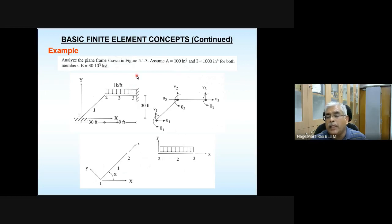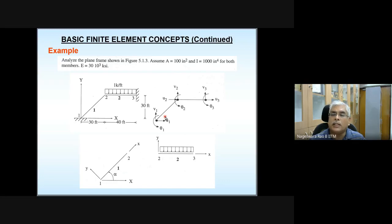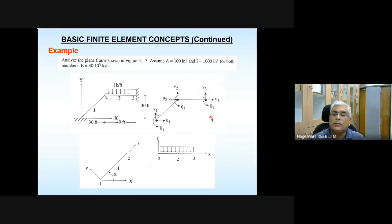Node numbering: this is element 1 connecting nodes 1 and 2, and element 2 connecting nodes 2 and 3. Node 2 is the common node for both elements. On element 2 there is a uniformly distributed load, so a fixed-end correction must be applied for the second element. The positive directions of degrees of freedom are shown: counterclockwise rotations are positive, upward transverse displacements are positive, and axial displacements along the local x-axis are positive.